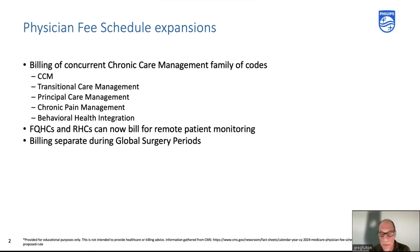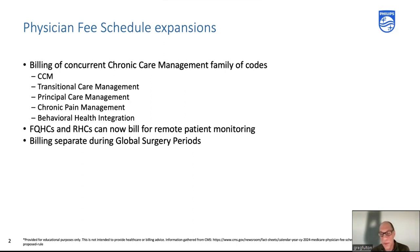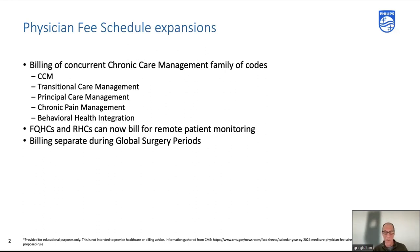One of the major expansions CMS did this year is really expanding out the billing of concurrent chronic care management family of codes along with RPM. In the past, some chronic care management codes could be billed concurrently with RPM — same patient, same month, separate 20 minutes. But beginning in 2024, all of the so-called CCM family of code sets can now be billed concurrently with RPM.